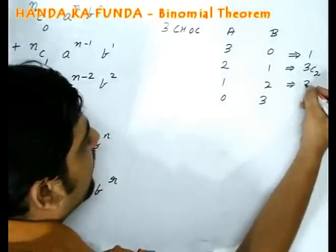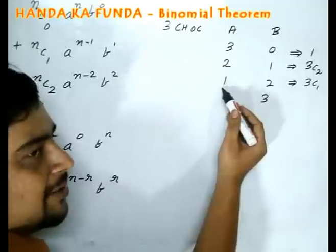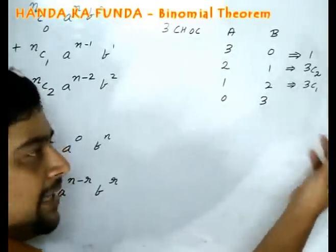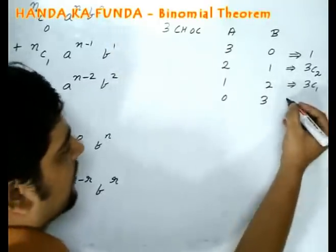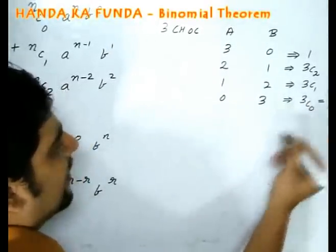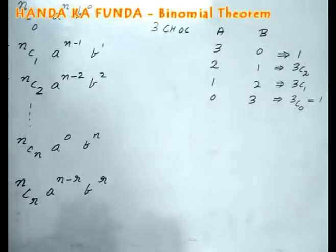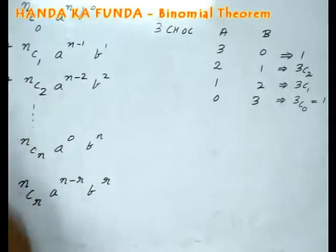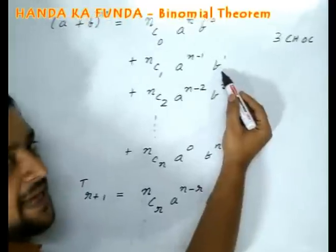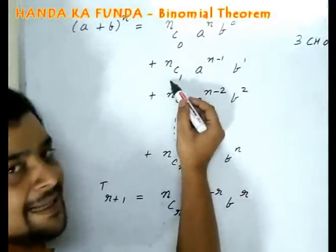This one will be 3C1. I can decide the one chocolate to give to a. I can select that from 3 in 3C1 ways. The other two automatically go to b. And this one will be 3C0 or simply 1 because I am giving all chocolates to b. Let us look back here. I am deciding one chocolate to give to b but which one. I will decide that in nC1 ways.